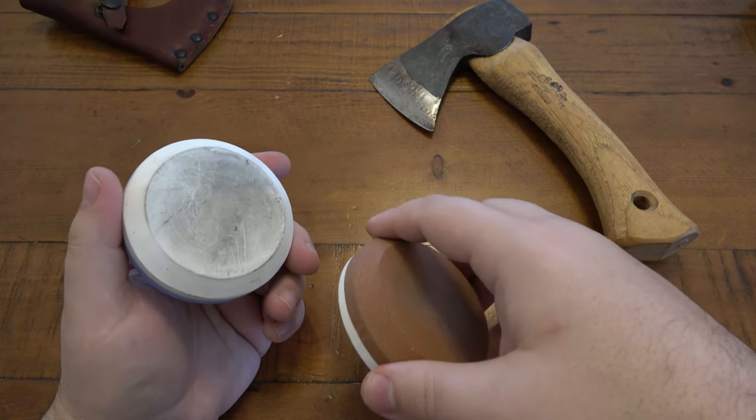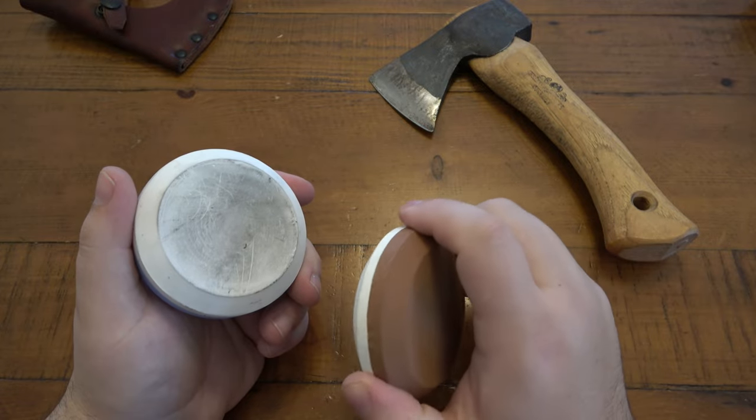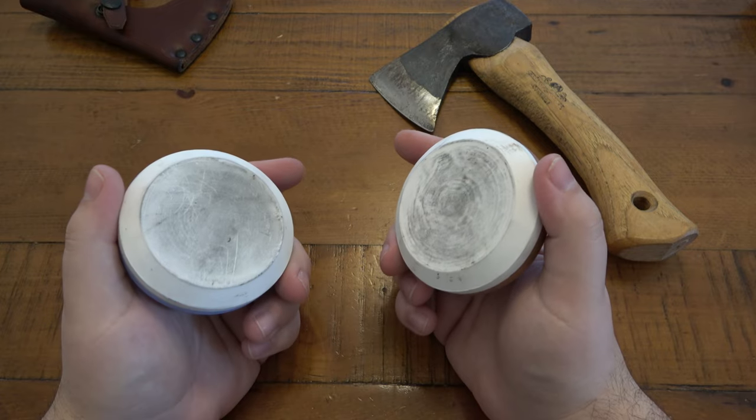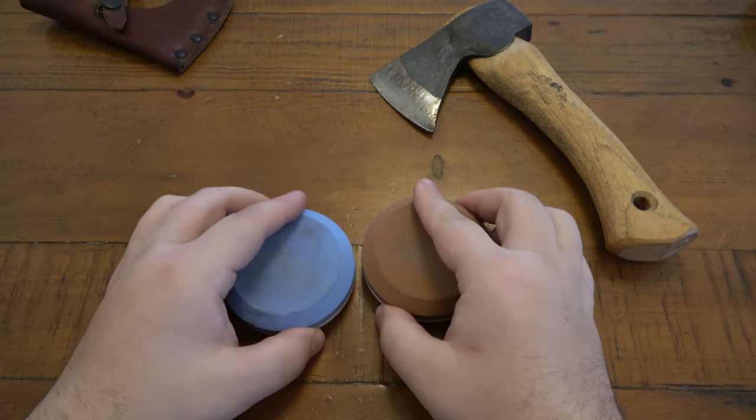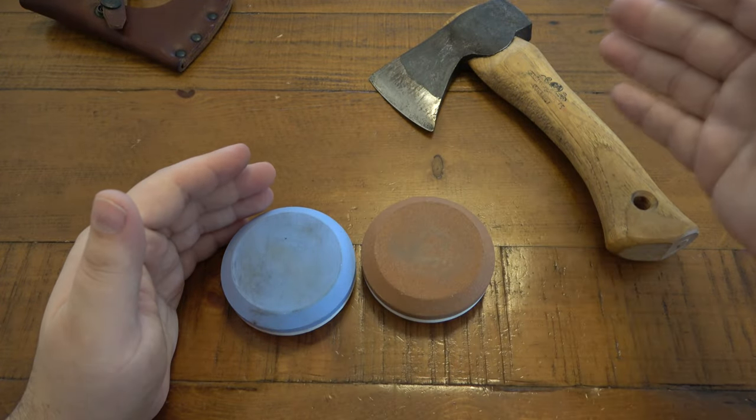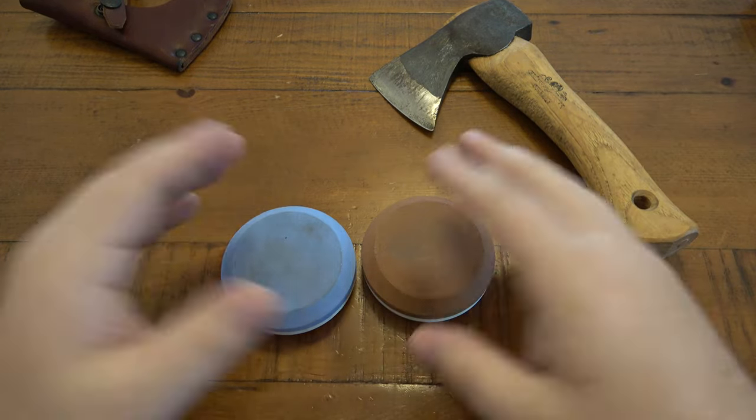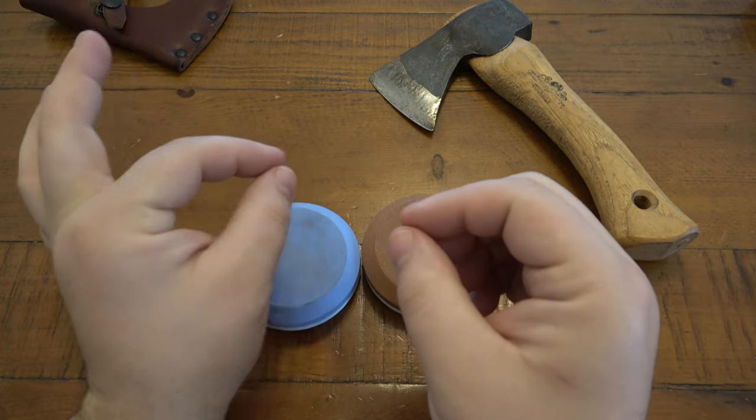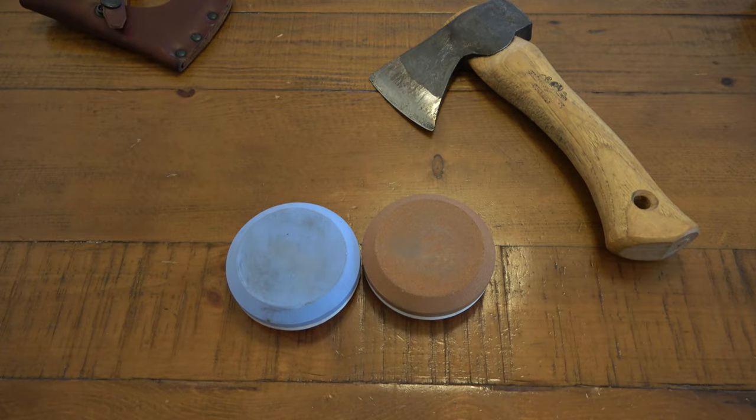If you don't know, the lower the number, the coarser it is and the faster it takes off material or sharpens. The higher the number, the finer it is and the slower it takes off material. When you're sharpening, you generally go from a low grit all the way up to a higher grit to sharpen and polish that edge. Any type of knife - it doesn't matter if you're talking about a knife, axe, whatever - an edge is just a thin piece of metal. You want to make it as thin as possible, therefore as sharp as possible.